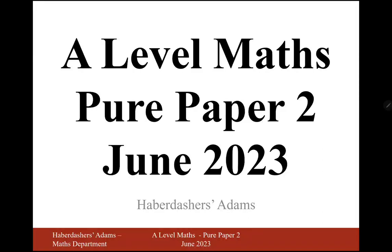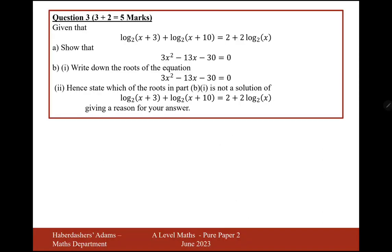Hello there, welcome to the A-Level Maths Pure Paper 2 of June 2023. Here we're looking at question 3. Given that we have this log equation here, show that 3x squared minus 13x minus 30 equals 0.